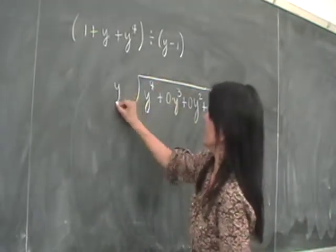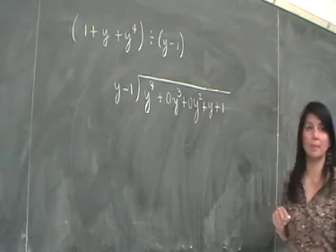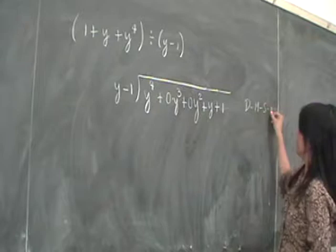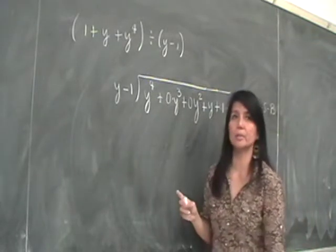The divisor is already okay. It's already arranged in descending order, so just copy that, all right? And now, if we apply our DMSB, divide, multiply, subtract, bring down process, what do we do?